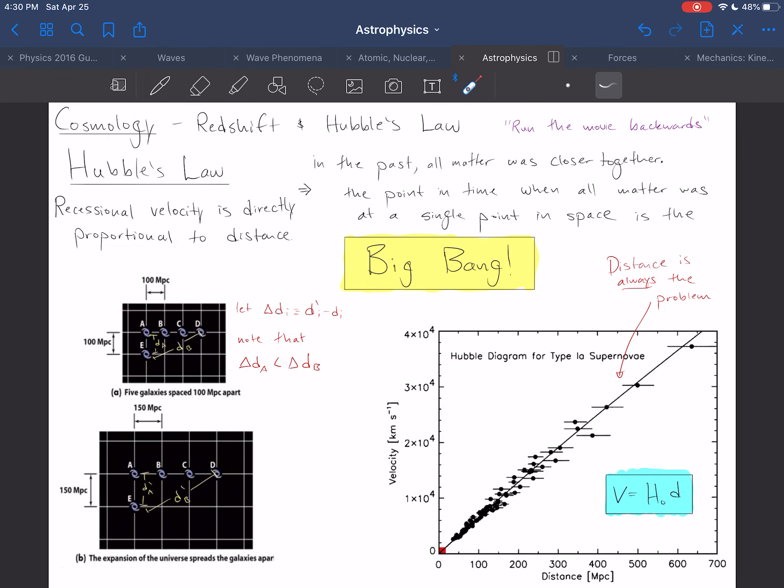All right, so what does this mean? What does this mean? Well, this is huge. Hubble's law says that the recessional velocity is directly proportional to the distance, which means that if we think about sort of what is going on, well, either we're at the center of sort of a large explosion, but really, just run the movie backwards. In the past, all the matter, all those galaxies were closer together. And assume for a second that's true for every galaxy. Then the point in time when all matter was at a single point, you just run the movie backwards, is the Big Bang.